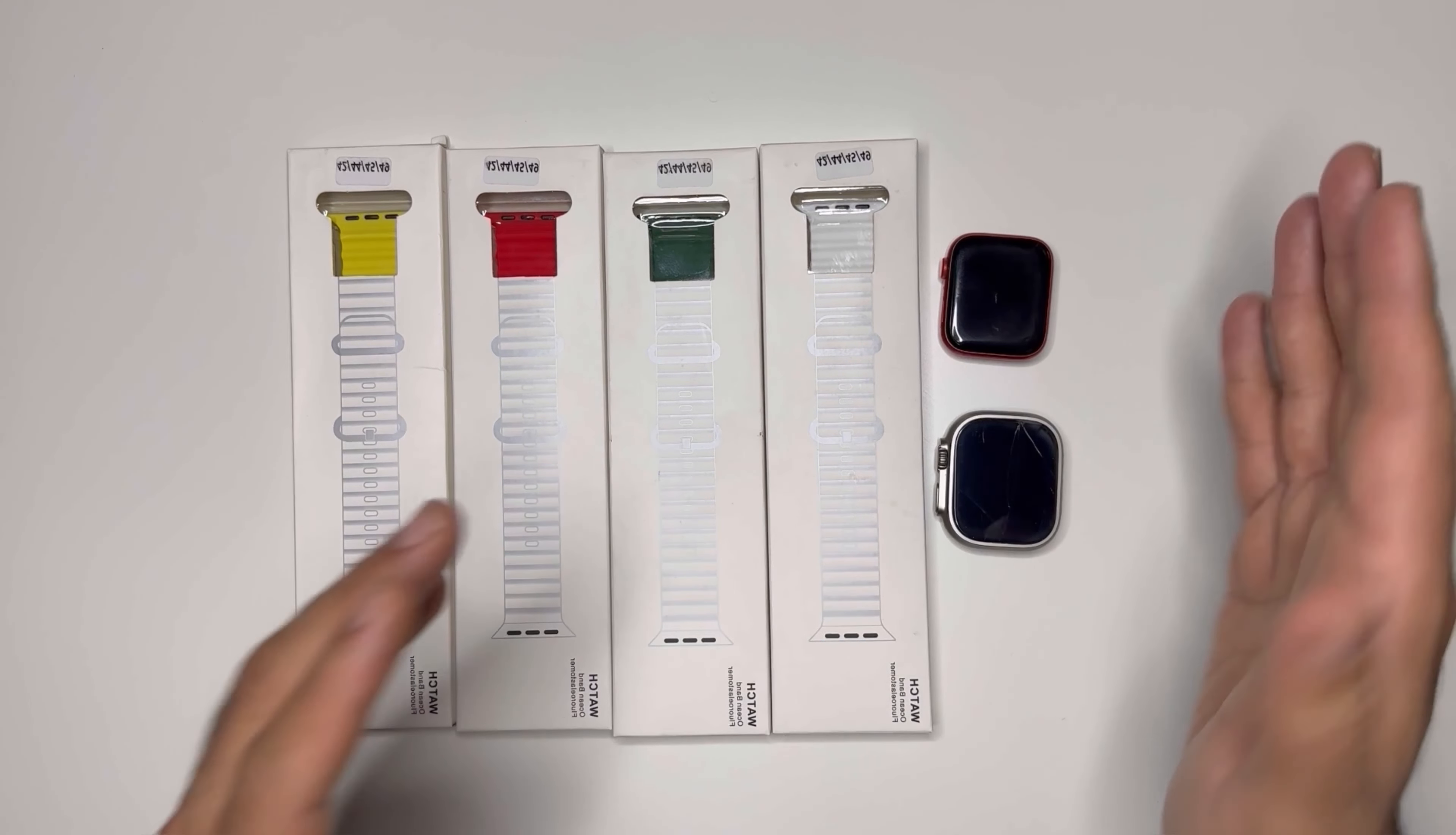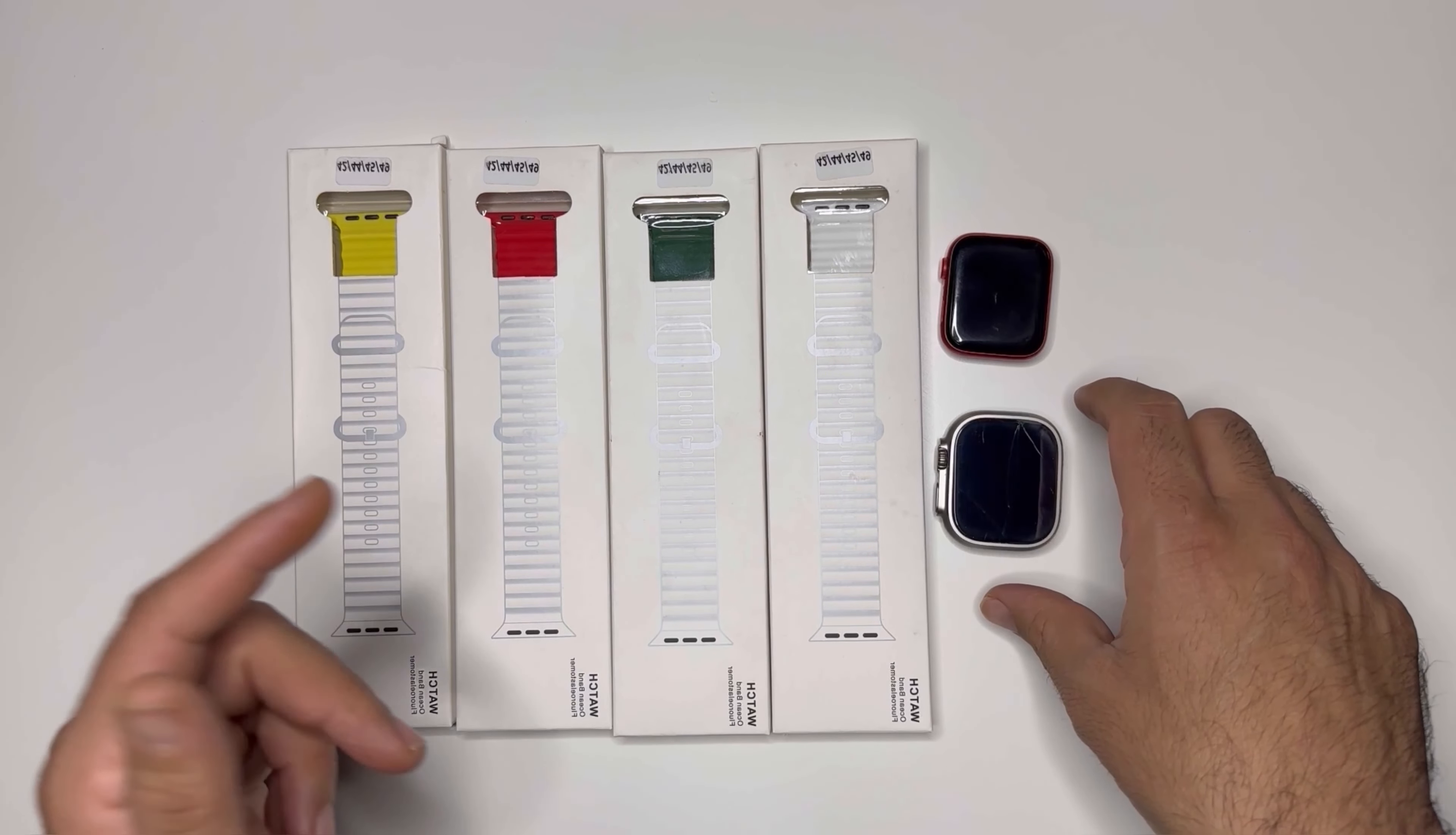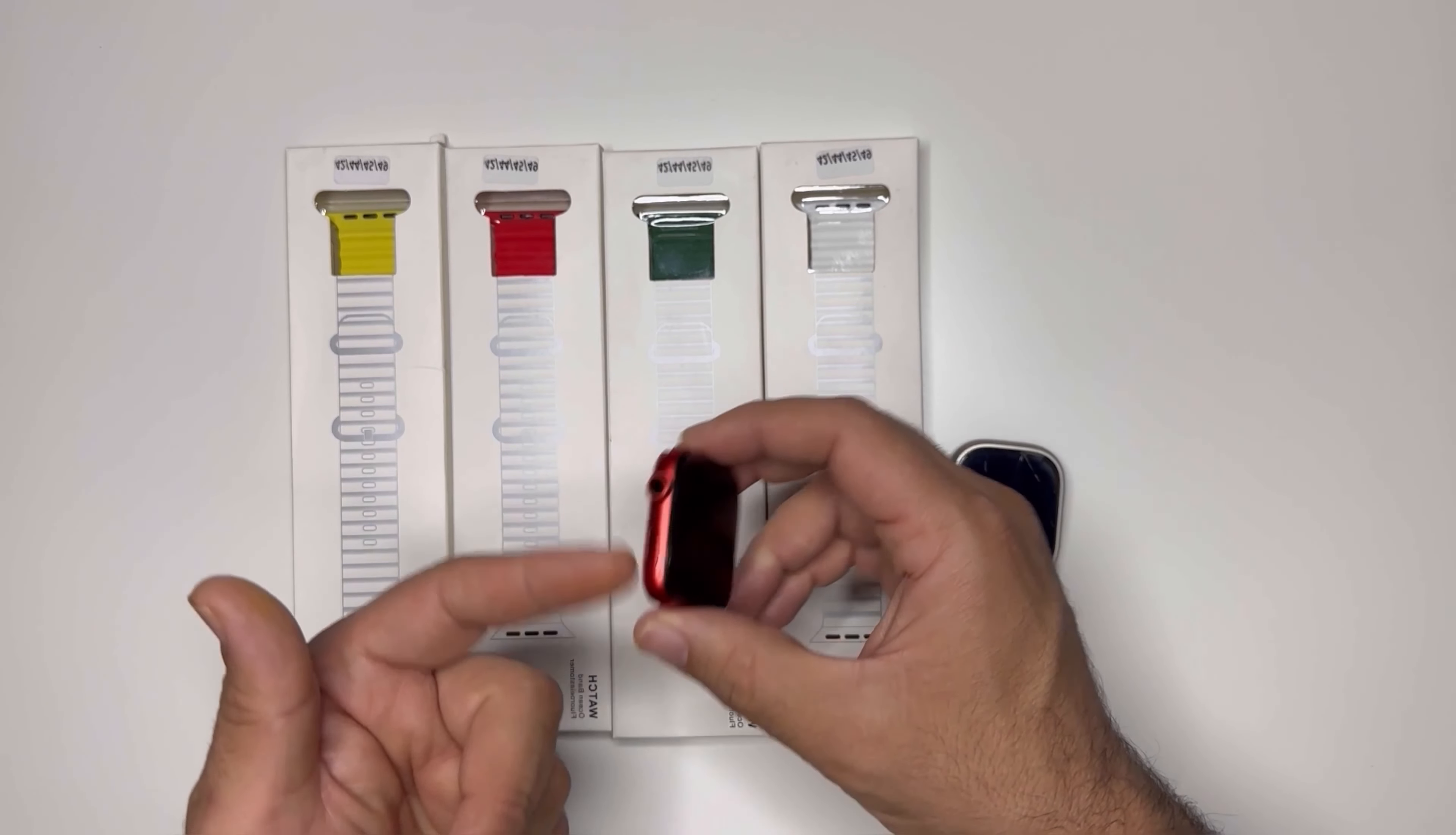Apple launched the Ultra watch a few months ago. It was the biggest Apple Watch in their series at around 49mm. I have a 44mm watch with me, the Series 6, this one is an old watch in red color.